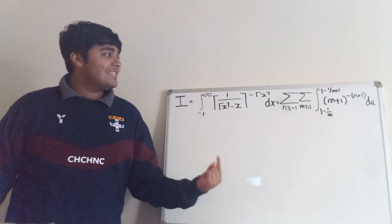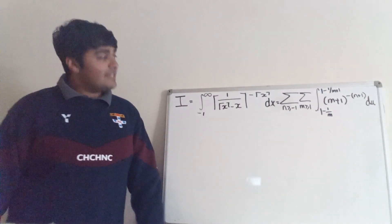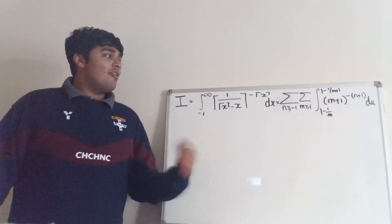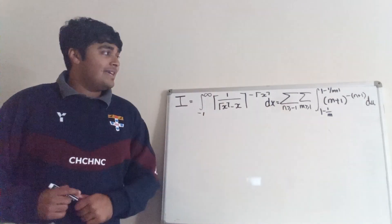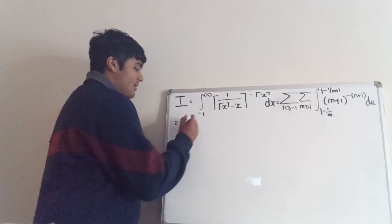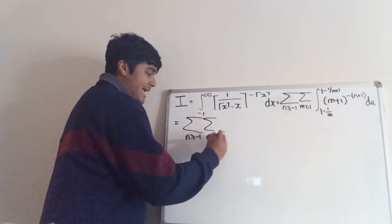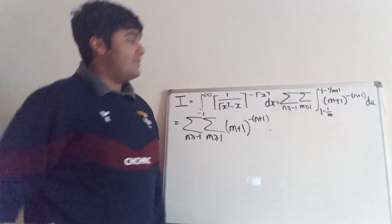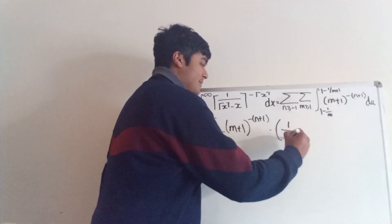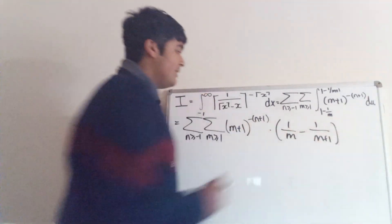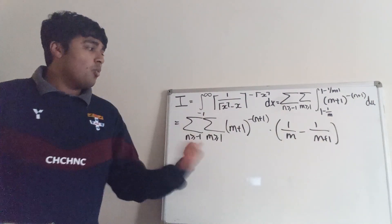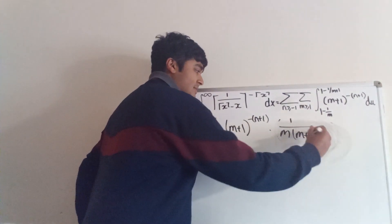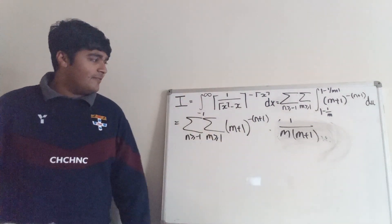So we just showed that the integral is equal to the double infinite sum from n equals minus 1 to infinity, from m equals 1 to infinity, of the integral from 1 minus 1 over m to 1 minus 1 over m plus 1, of m plus 1 to the minus n plus 1, du. That integral is independent of u, so it equals the double sum of m plus 1 to the minus n plus 1 multiplied by the length of the interval, which is 1 over m minus 1 over m plus 1. That simplifies to 1 over m times m plus 1.